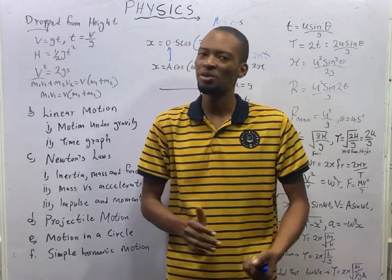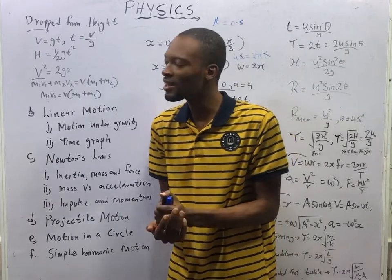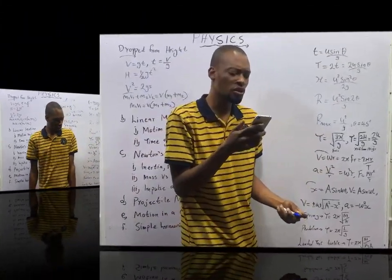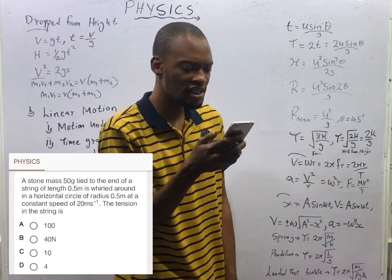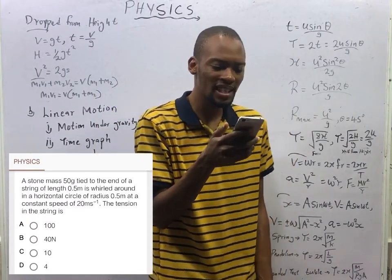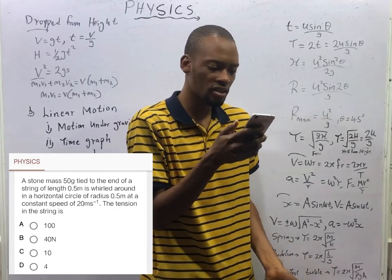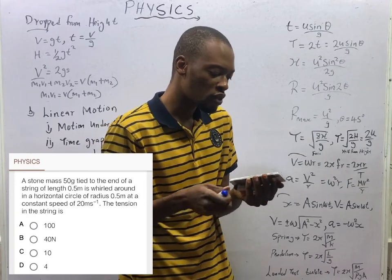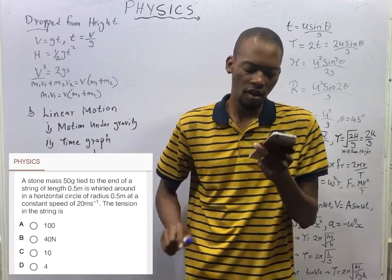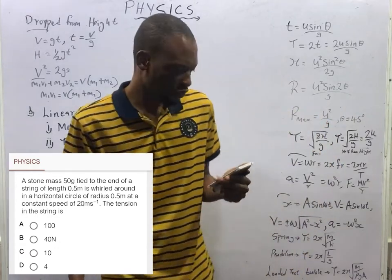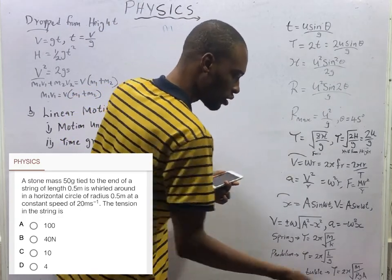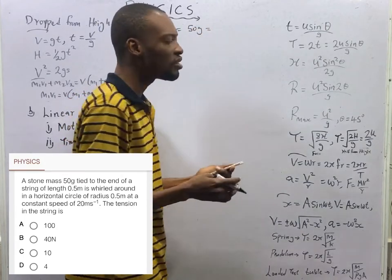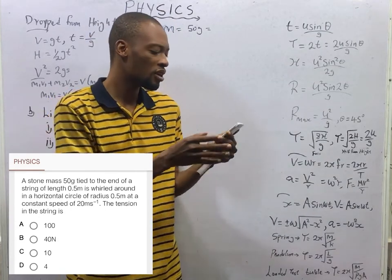These are the formulas you need for motion. Now let's look at a question. A stone of mass 50 grams is tied to the end of a string of length 0.5 meters and is whirled in a horizontal circle of radius 0.5 meters at a constant speed of 20 meters per second. The tension in the string is? We are given mass as 50 grams. Converting to kilograms: 50 over 1000 gives 0.05 kg.